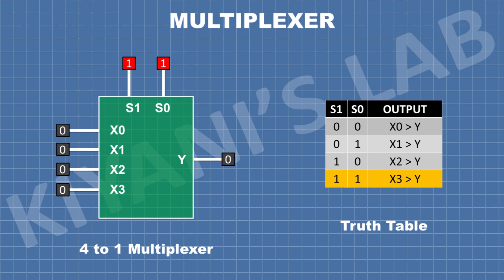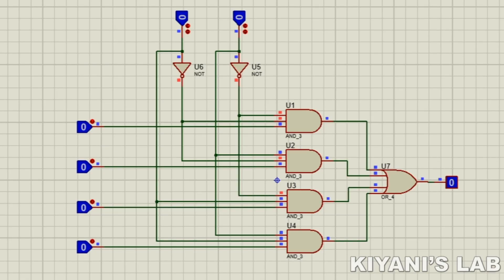Now let's make a logical circuit of 4-to-1 multiplexer to better understand how it works. So this is the logical circuit of a 4-to-1 multiplexer. It is made with two NOT gates, four 3-input AND gates and one 4-input OR gate.